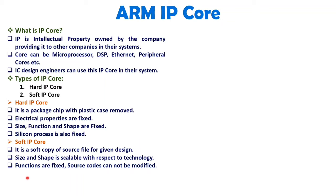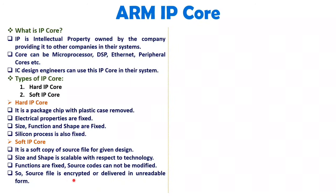With soft IP core, functions are fixed. The company purchasing the IP core cannot modify the source code. For example, if any company is asking for ARM7 IP core — ARM7 is a version of IP core — the function which is there with ARM7 cannot be modified. So the source code of that IP core will be fixed and it cannot be modified. ARM will provide an encrypted file of source code, delivered in unreadable form, so any company cannot decrypt it or do any changes inside.